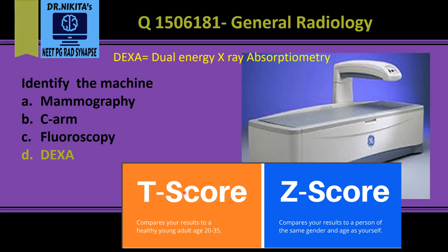What is the T-score and Z-score? A T-score compares your results to a healthy young adult aged 20 to 35 years, while a Z-score compares your results to a person of the same gender and age as yourself. So gender and age are matched in the Z-score, while in the T-score it is compared to a young adult of your gender.